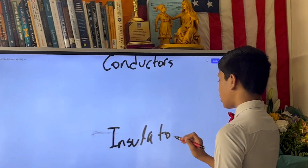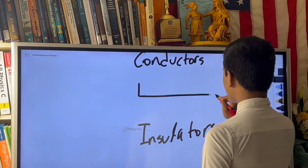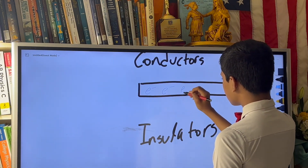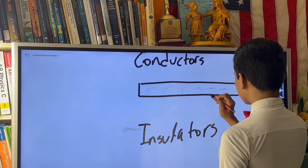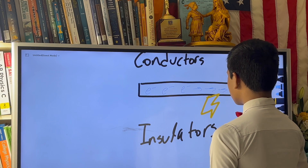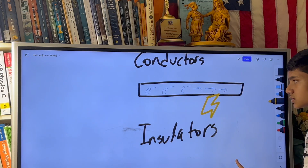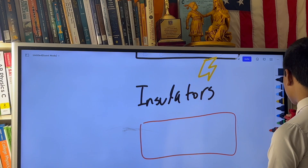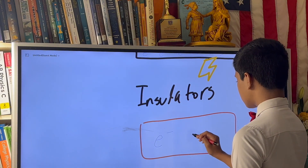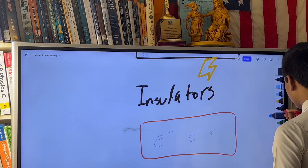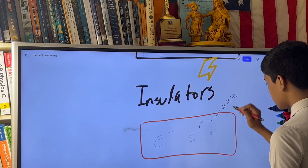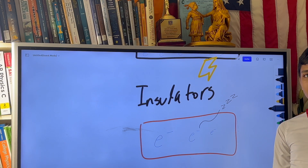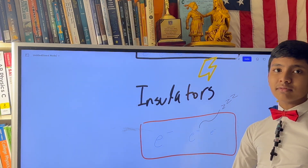Conductors are things that are very good at moving electric charge within them, so these electric charges are moving very fast. Meanwhile, insulators are materials made in order to slow down electric charge, so these electric charges are basically staying still. This insulator is like a sponge for electric charge — it's taking in a bunch of it without letting any of it out.